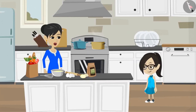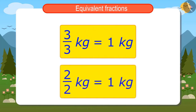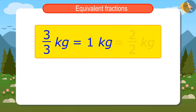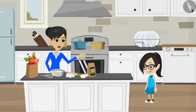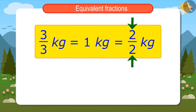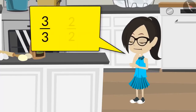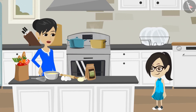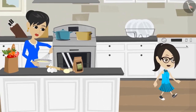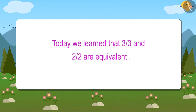But first I need to know something. Just like 3 upon 3 kilo has 1 kilo of potatoes, I think 2 upon 2 will also have 1 kilo of potatoes, because by dividing a kilogram into 2 equal parts, both its parts written together will be 2 upon 2. Yes, Vandana — when there is the same number in the numerator and denominator, it means we are talking about the whole quantity. So 3 upon 3 and 2 upon 2 are equivalent fractions. Today we learned that 3 upon 3 and 2 upon 2 are equivalent fractions.